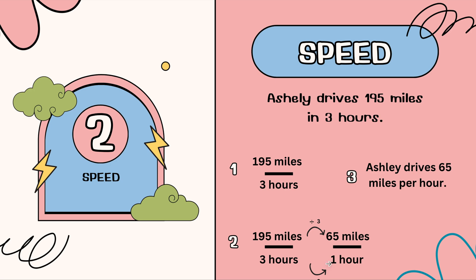I know I divide by 3. Whatever I do to the bottom, I have to do to the top. 195 divided by 3 gives me 65. So Ashley drives 65 miles per hour. Again, this line can be replaced with the word per.